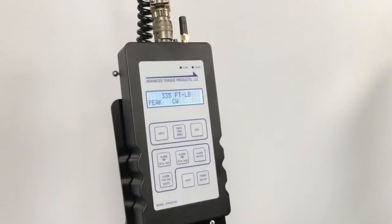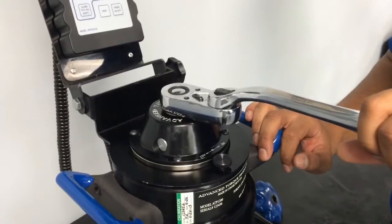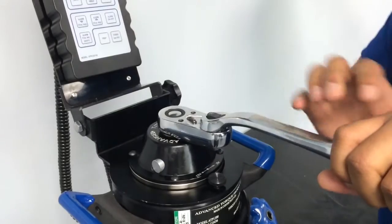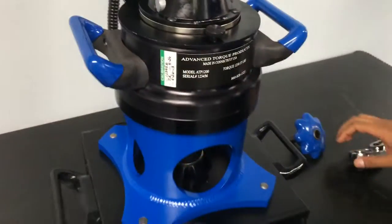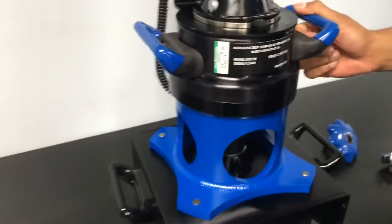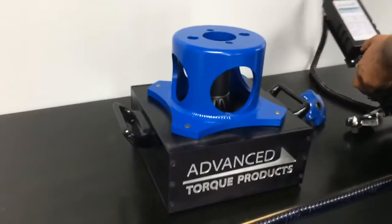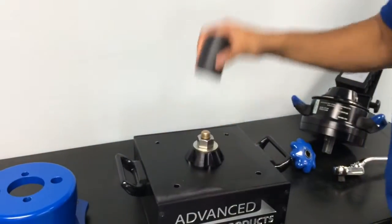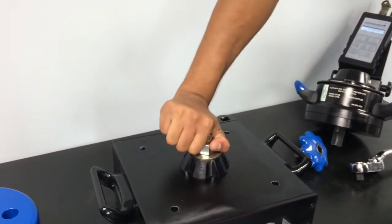Once target torque is achieved, place the pawl back in the neutral position and release all the force from the multiplier. Now we can remove the torque multiplier, the reaction stand, and the socket from the application. Tightening is now complete.